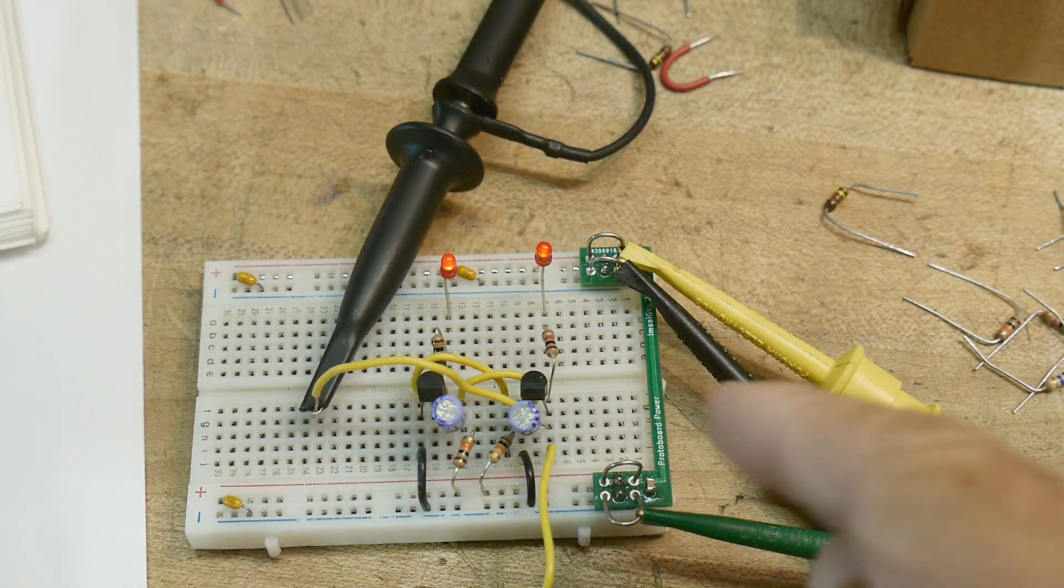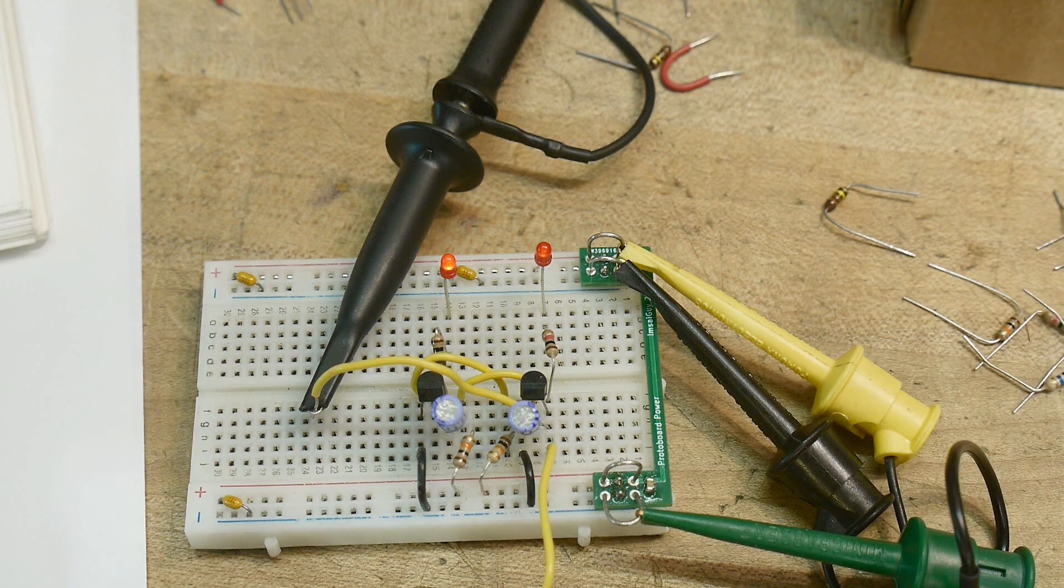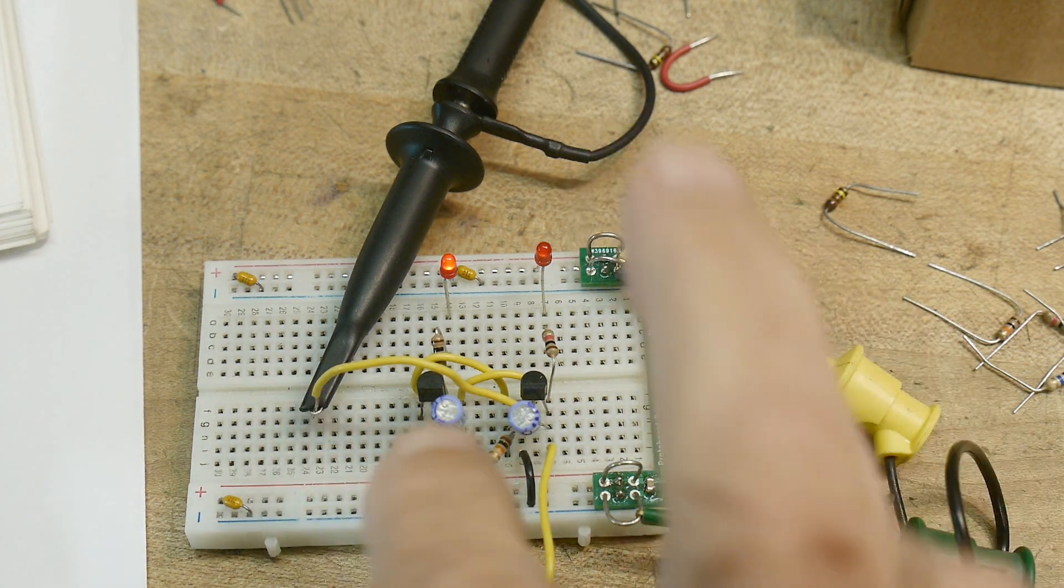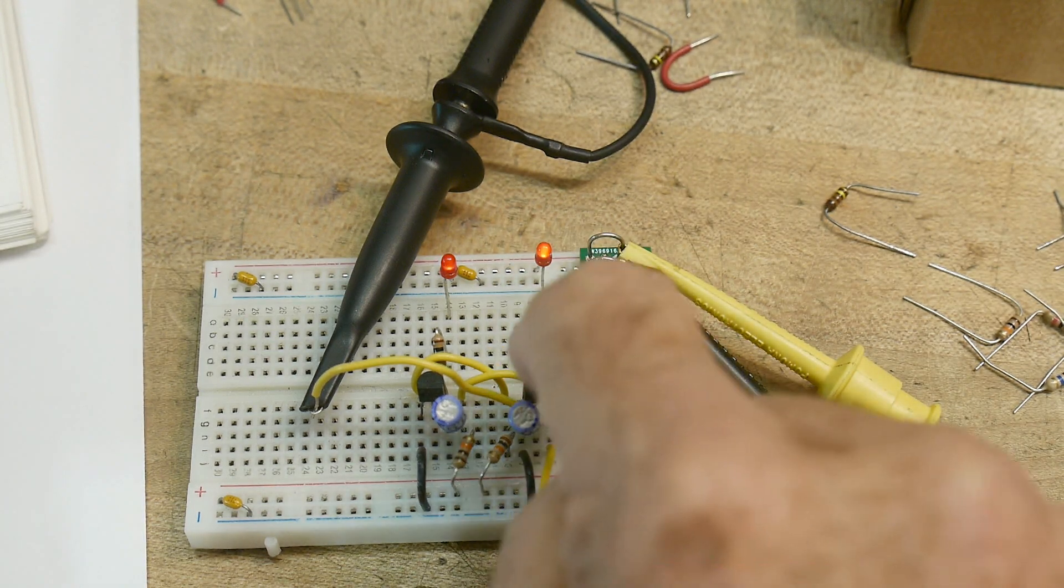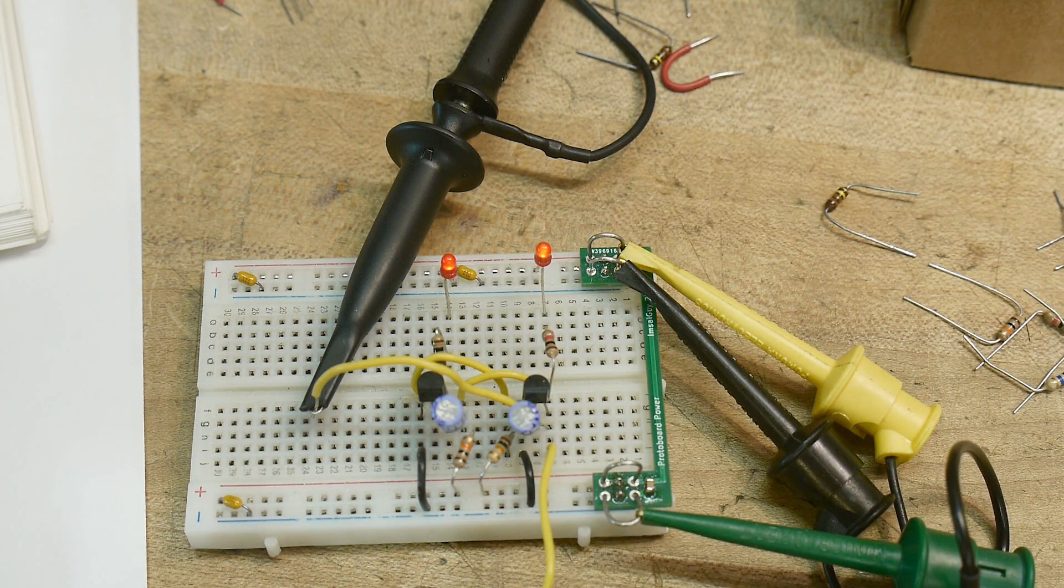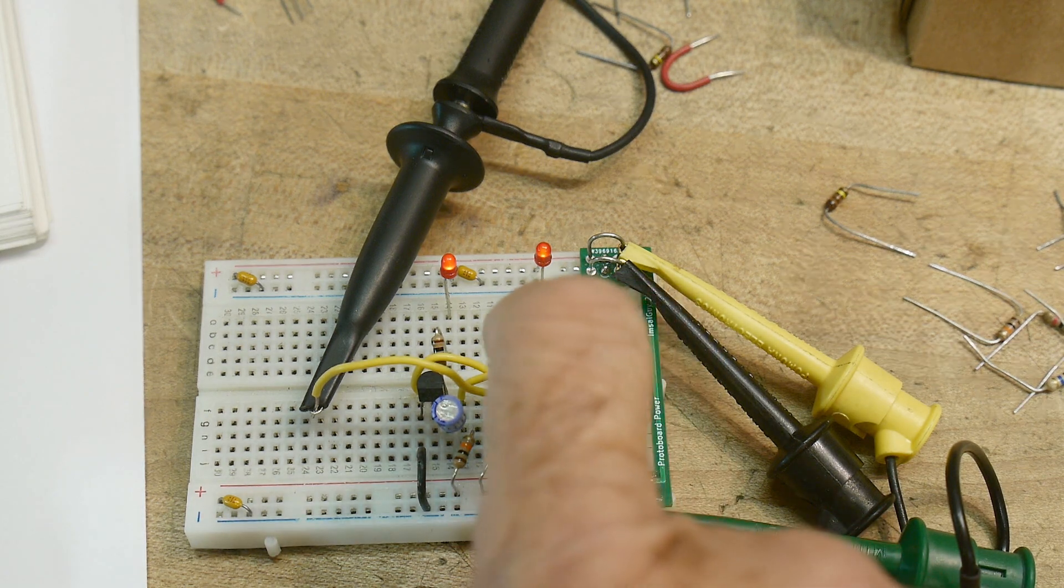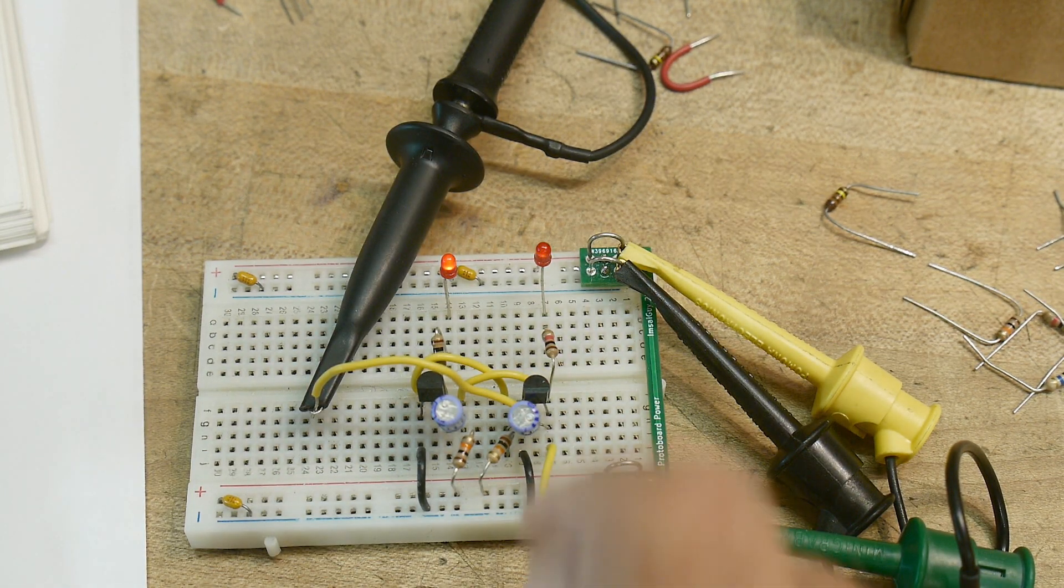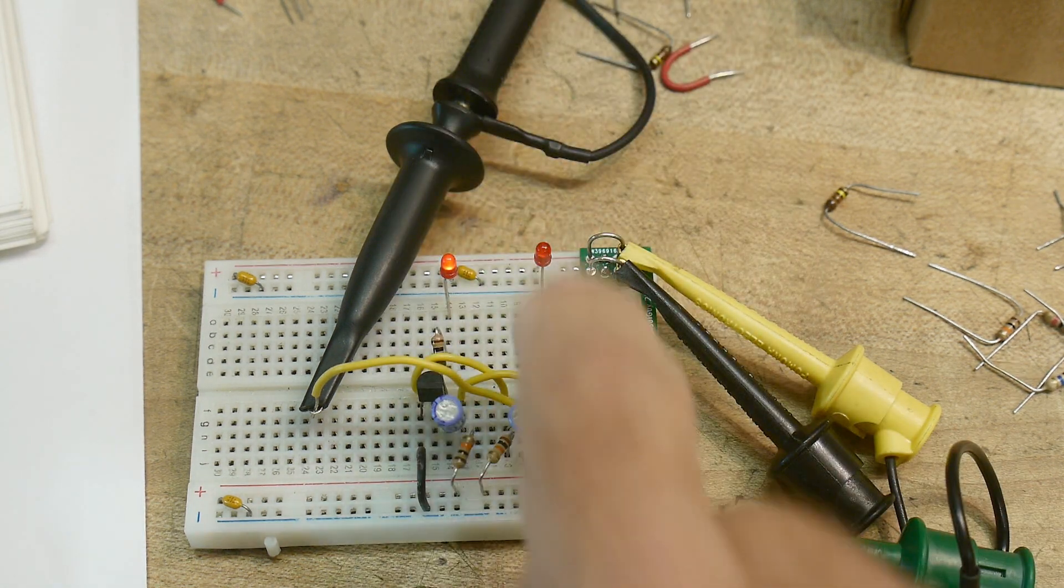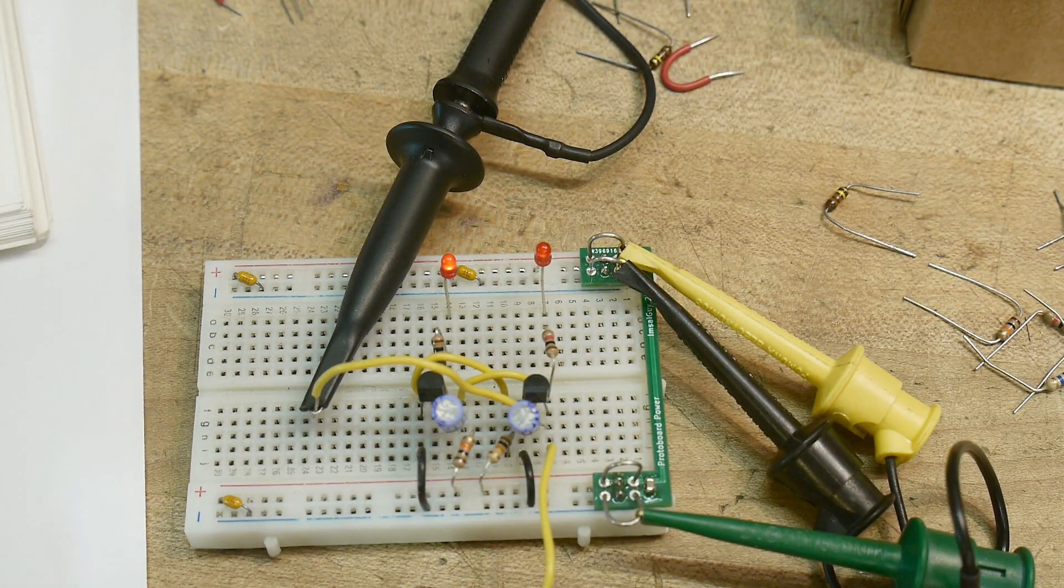So I'm going to be putting a scope probe on the collector of this transistor. So when the LED is on, the transistor is on and the transistor is pulling to ground. So the collector should be at ground when the LED is on. And then we'll be monitoring the base.